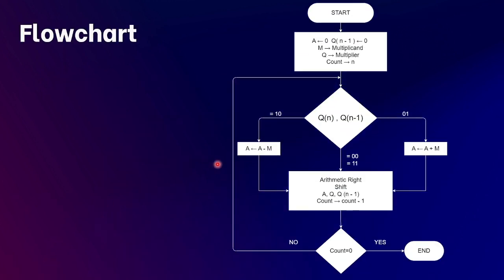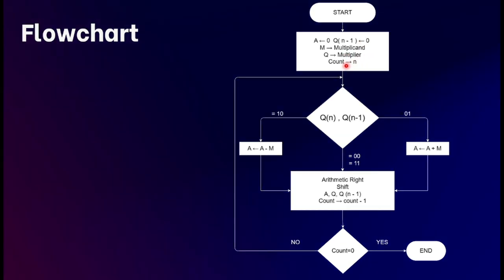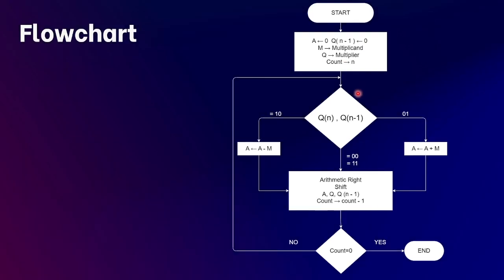Now Vaishnavi will explain the flowchart. We start by initializing the accumulator to zero, the flip-flop Q minus one to zero, and storing the multiplicand in a register. Then we store the multiplier in another register and store the count, that is the number of bits in the multiplier, in another register. Next we check the bits Q zero and Q minus one. If they are both zero or both one, we perform an arithmetic right shift on the accumulator, Q, and Q minus one.